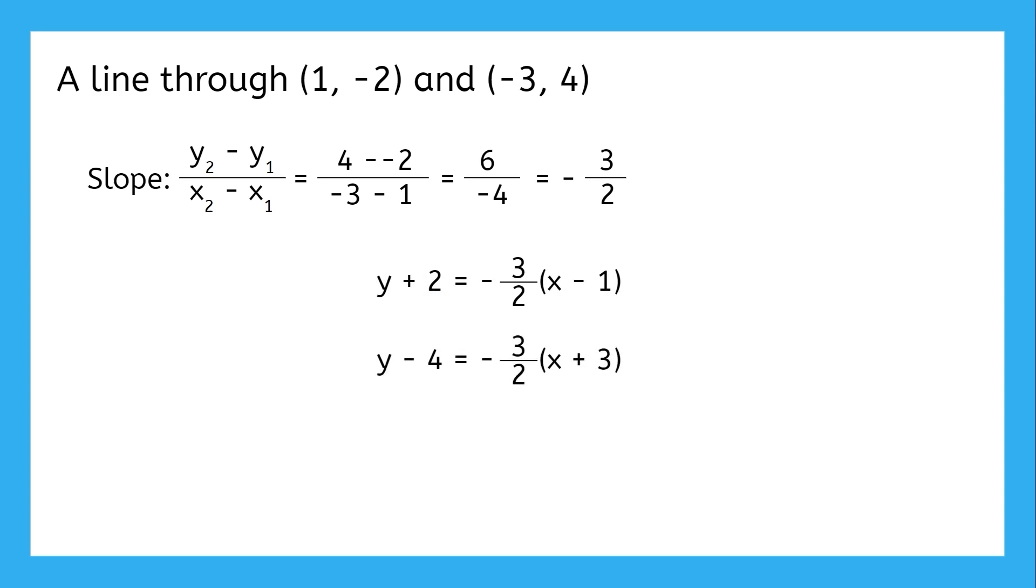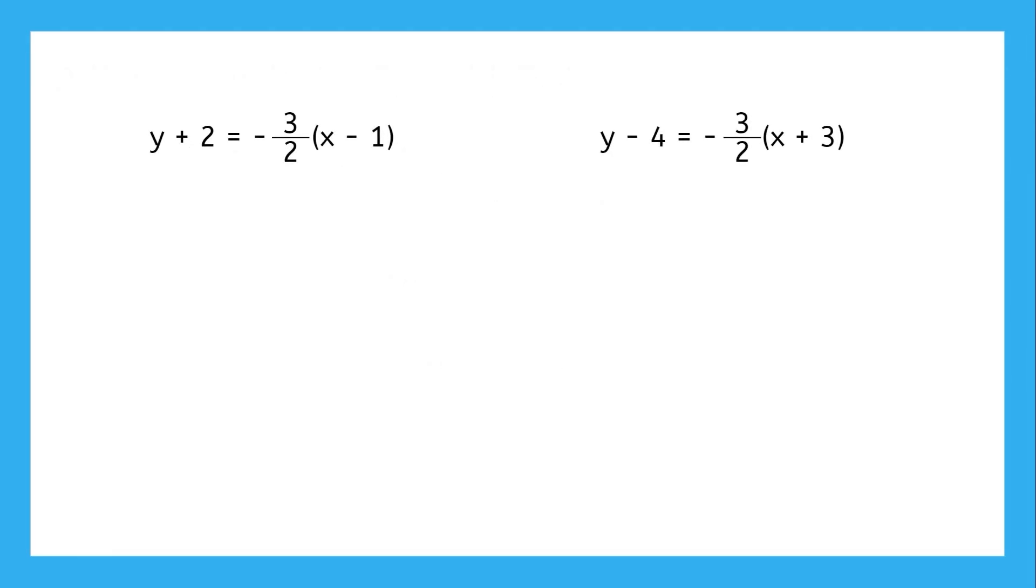Again, remember that these are actually the same equation for the same line. They're just expressed using different points on that line. In fact, let's prove that these are the same equation by solving both for y. To make the calculations easier, we'll put the slope in decimal form. So, negative 3 divided by 2 is negative 1.5.